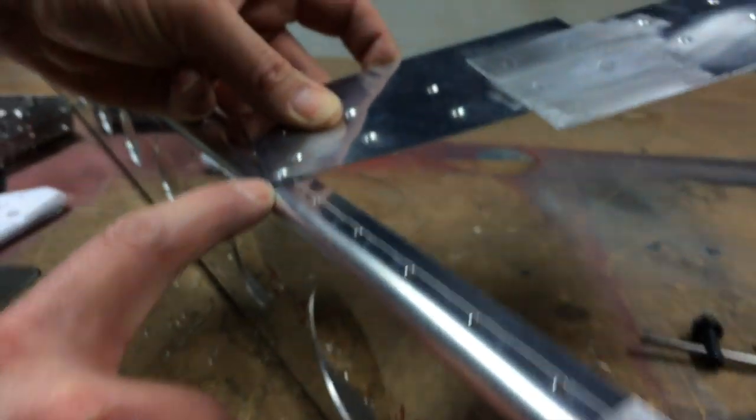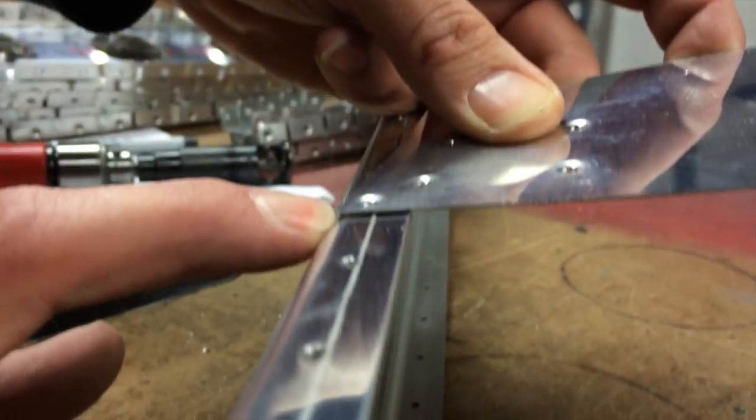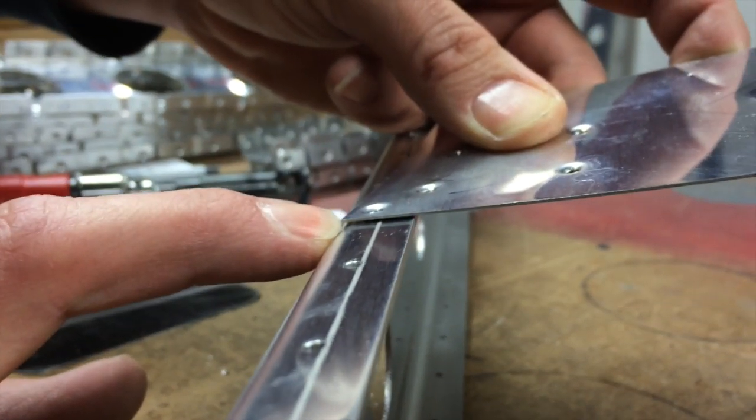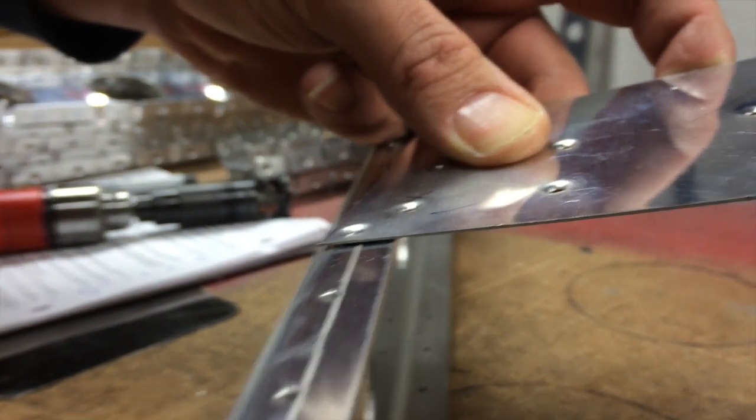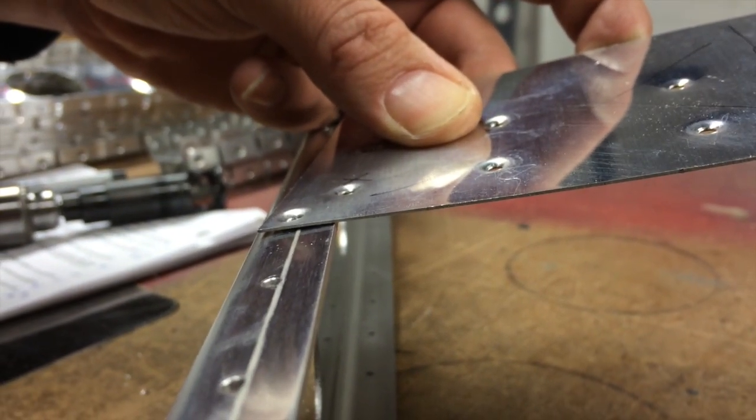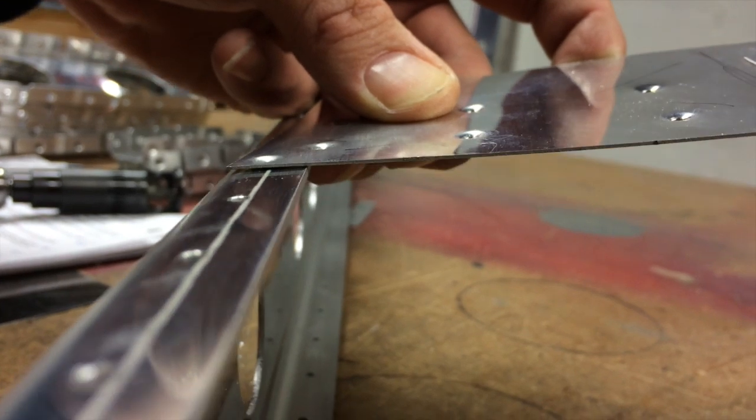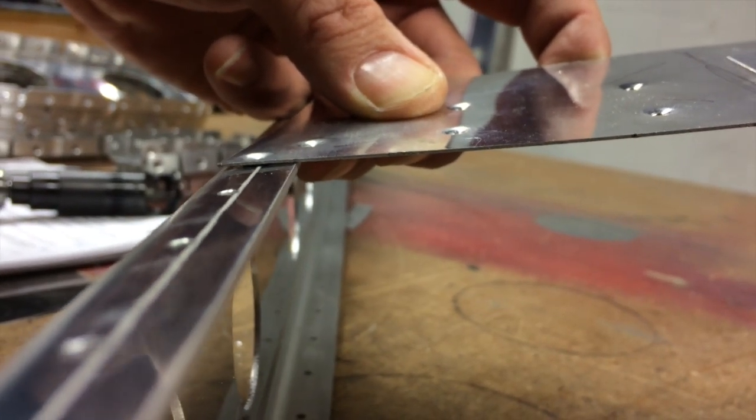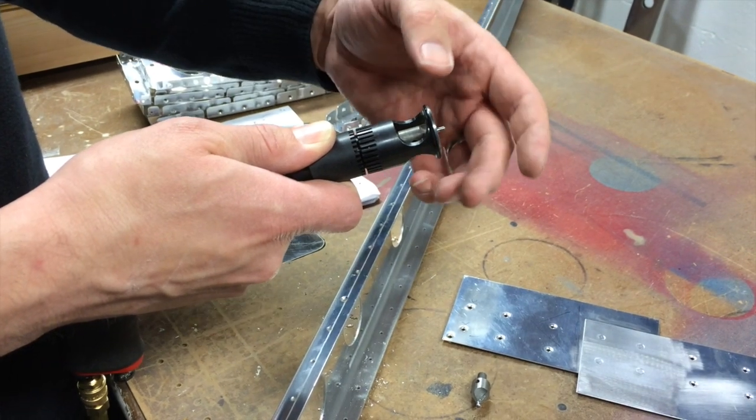So the distance, the difference in that gap, is the difference that I need to change the countersink. So I'm guessing, just based on my experience, probably 20 thousandths, which would be 20 notches. So I'm going to go 10 just to be safe. Going in would make it deeper.